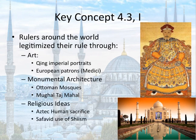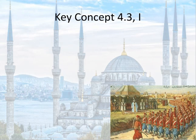You also see rulers try to legitimize their rule through religious ideas. This is best exemplified by the Aztecs, who used human sacrifice, ordered oftentimes by the emperor, to legitimize their power. You also see the Safavid use of Shiite Islam as a way to legitimize power. So rulers are using non-traditional ways to legitimize their rule.